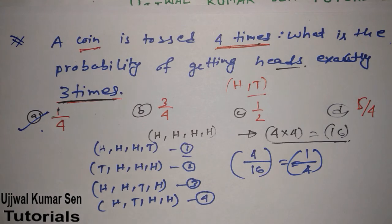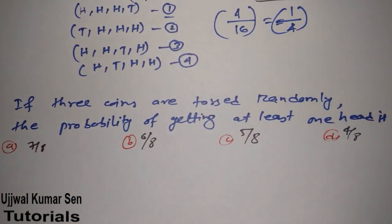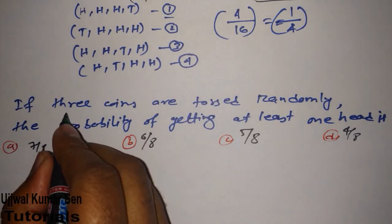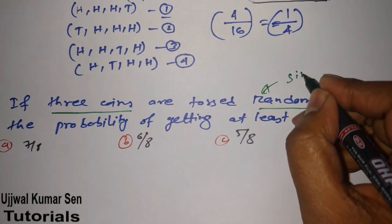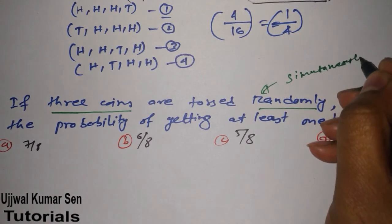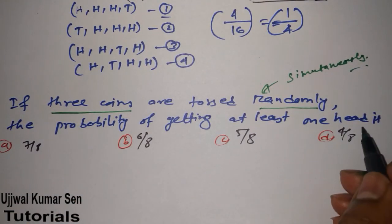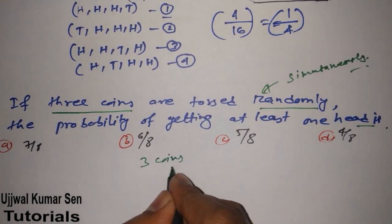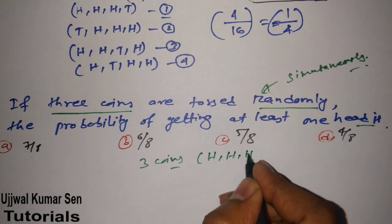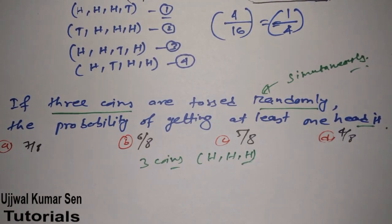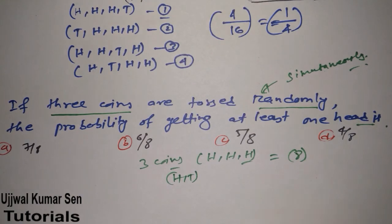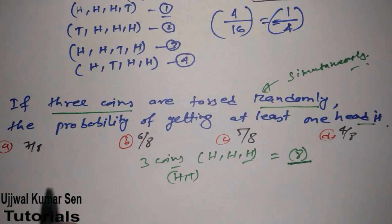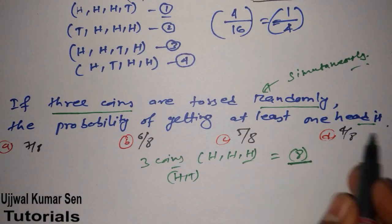Now let's go to the next question, which is right in front of you. This question says: if three coins are tossed simultaneously, what is the probability of getting at least one head? With three coins, the sample space starts from Head-Head-Head, and the total number of outcomes is 8.